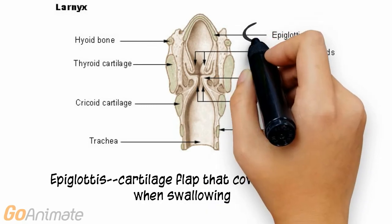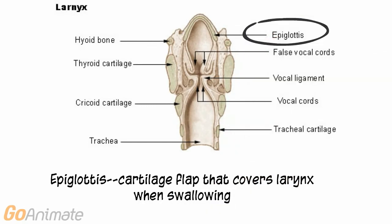Here is a posterior view of the larynx. We can see a cartilage flap called the epiglottis. The epiglottis closes when swallowing to protect the airway.